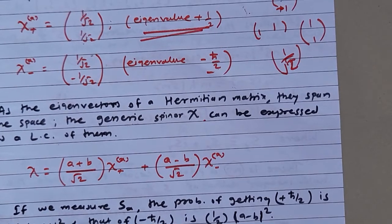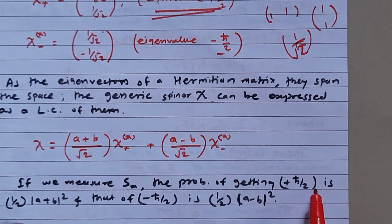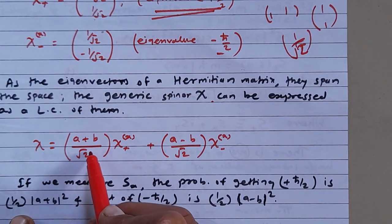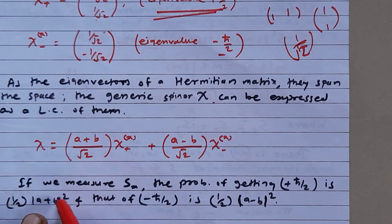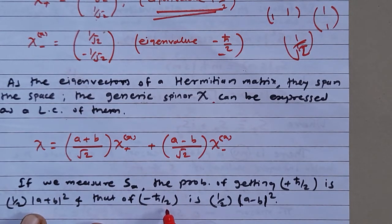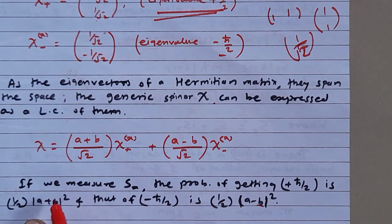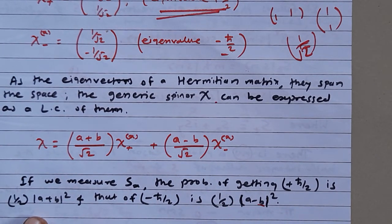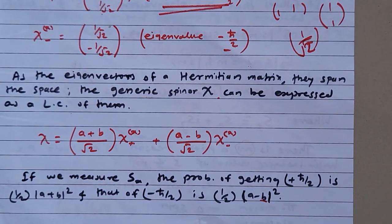If we measure Sx, the probability of getting +ℏ/2 is |[(a+b)/√2]|² = (1/2)|a+b|², and the probability of getting -ℏ/2 is (1/2)|a-b|². Adding these two probabilities together gives 1, confirming normalization — the probability of finding the particle in one of the two states is 100%.